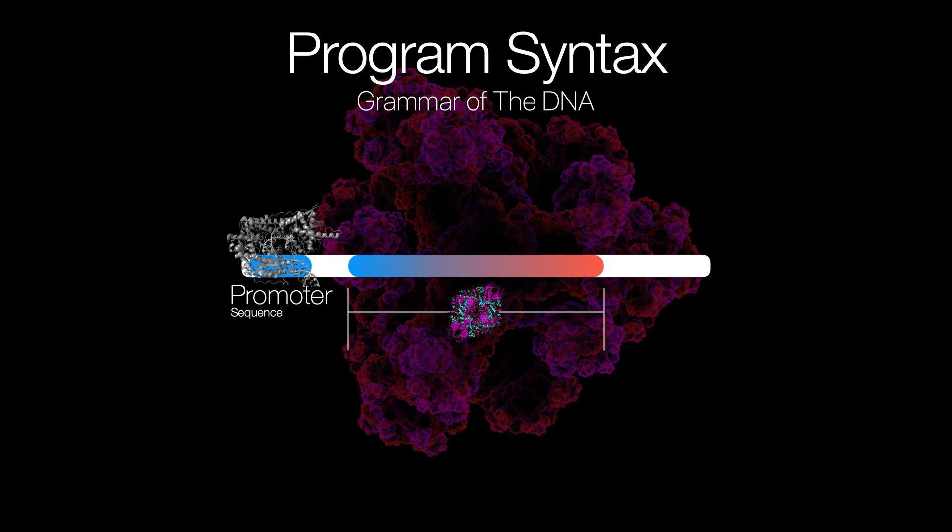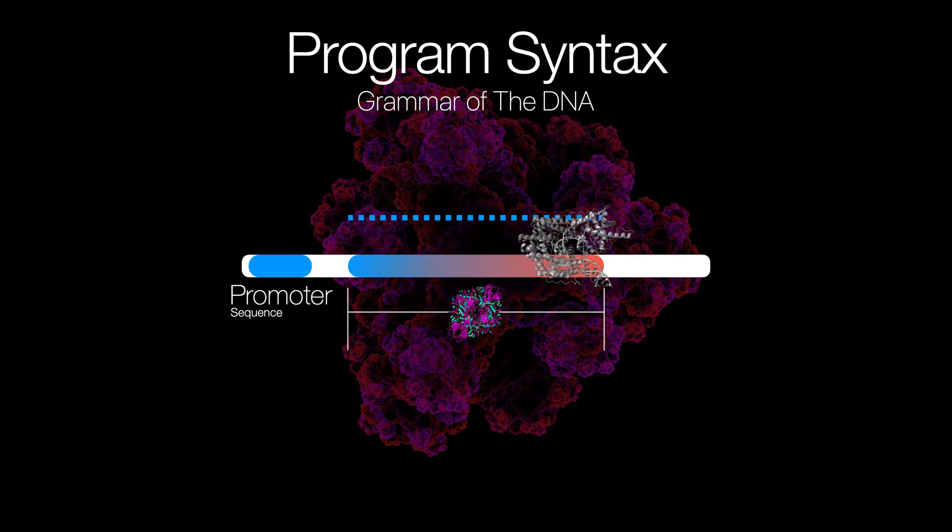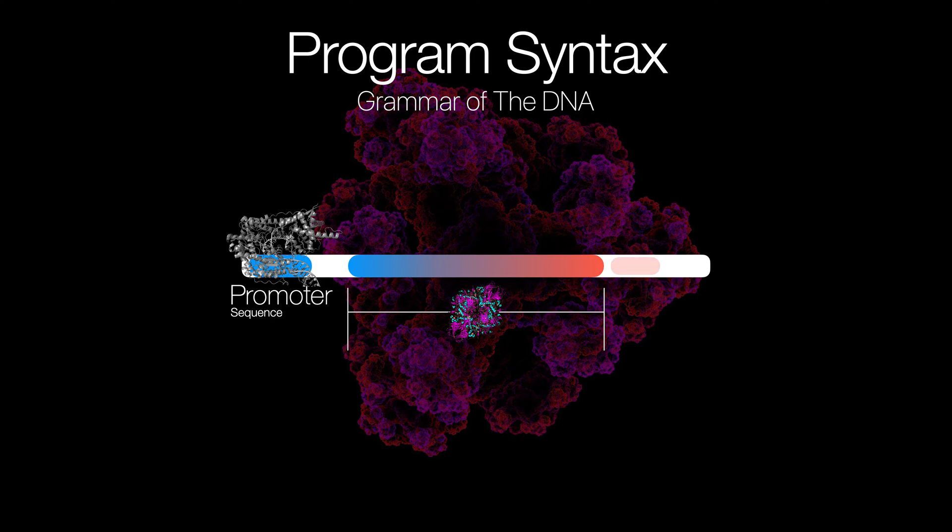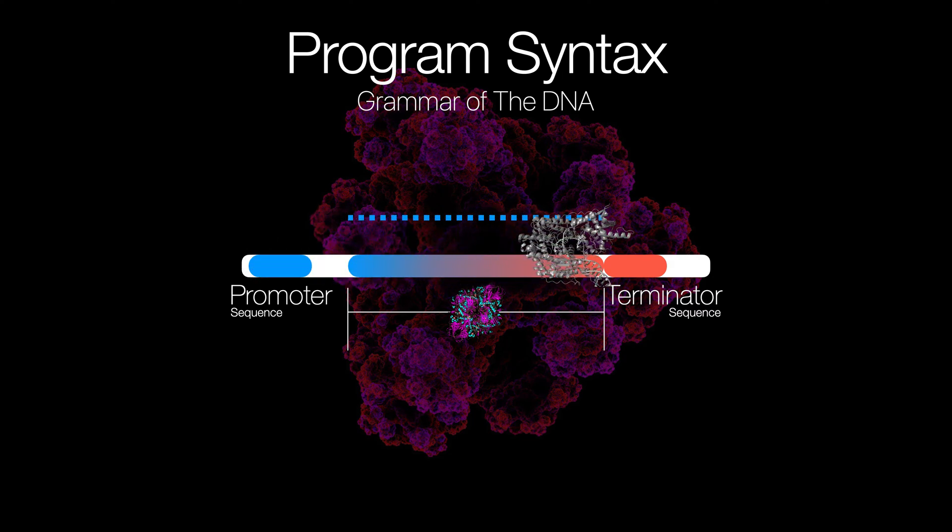So now, we can transcribe, but wait, we can't stop. So that's why you also add something called a terminator sequence to terminate transcription. And now, the RNA polymerase can really tell when to start and stop transcription, and in a sense, highlight where our protein blueprint is.